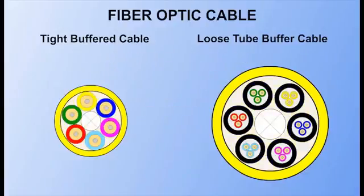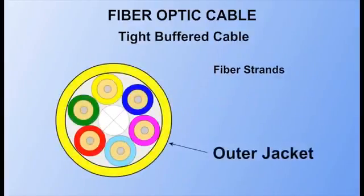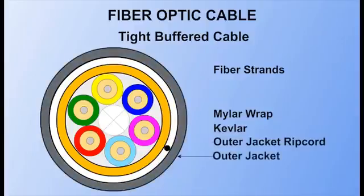They are, however, designed for different environments. A tight buffered cable consists of one or more bundled fiber strands covered by an outer jacket. Often, the outer jacket contains multiple layers to add structure to the cable and provide water resistance.